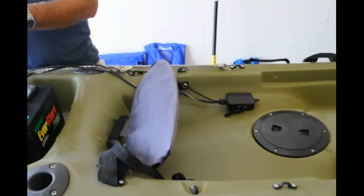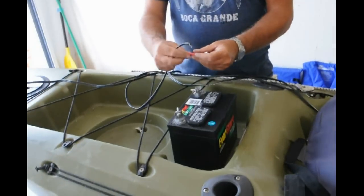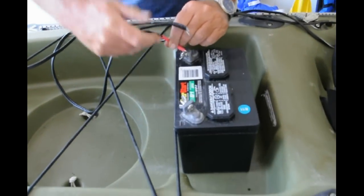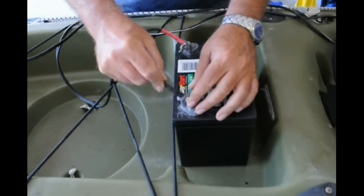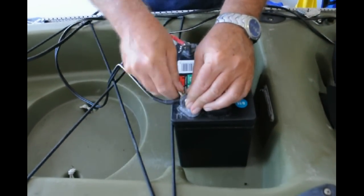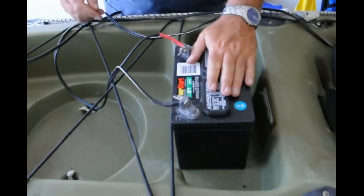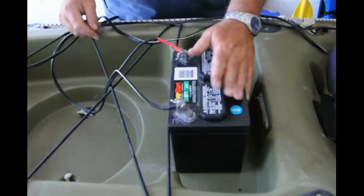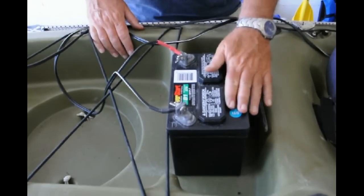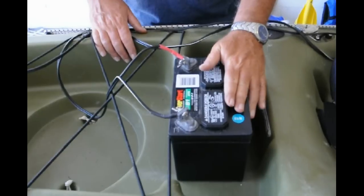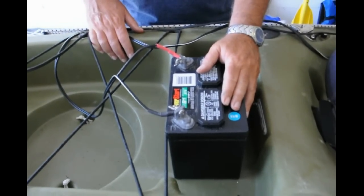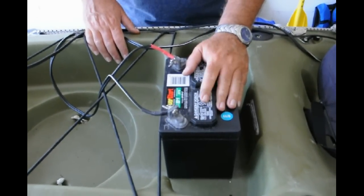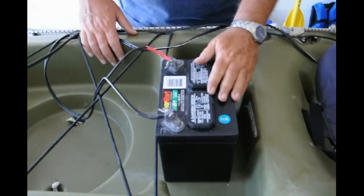Next, we just take our red goes to positive, black goes to negative. This is a basic battery. We got it from one of the big block stores. You can use any kind of battery that you want to buy, from a marine battery to a sealed lead acid battery. For our purposes, we're just using this light one.